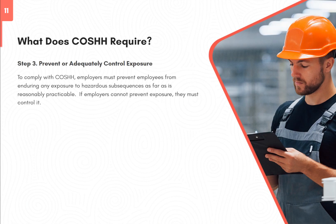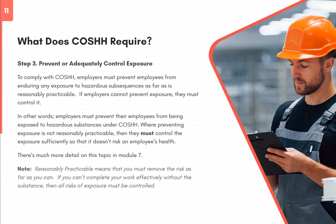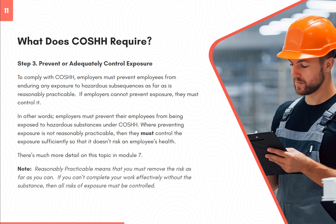Step 3: Prevent or adequately control exposure. To comply with COSHH, employers must prevent employees from enduring any exposure to hazardous substances as far as is reasonably practicable. If employers cannot prevent exposure, they must control it. Where preventing exposure is not reasonably practicable, they must control the exposure sufficiently so that it doesn't risk an employee's health. Note: 'Reasonably practicable' means you must remove the risk as far as you can. If you can't complete your work effectively without the substance, then all risks of exposure must be controlled. More detail is in Module 7.